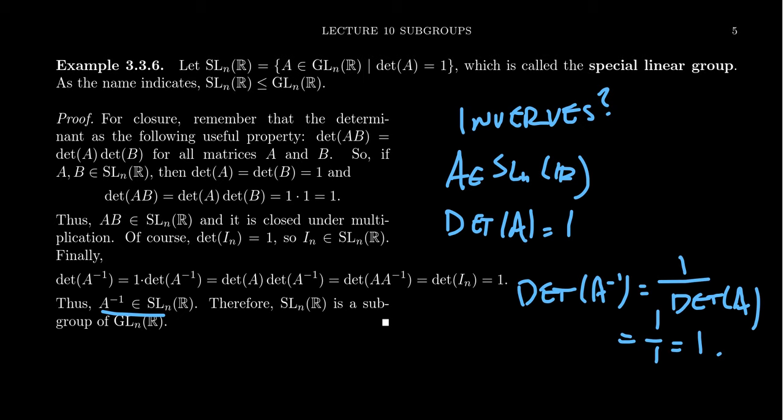Therefore, we have proven that the special linear group is a subgroup of the general linear group. Proving that a subset is a subgroup is typically done in this manner: we show it's closed under multiplication, that it contains the identity, and that it's closed under inverses — that is, every element of the set also contains its inverse. We can always check those three properties when we want to verify whether a subset is a subgroup or not.